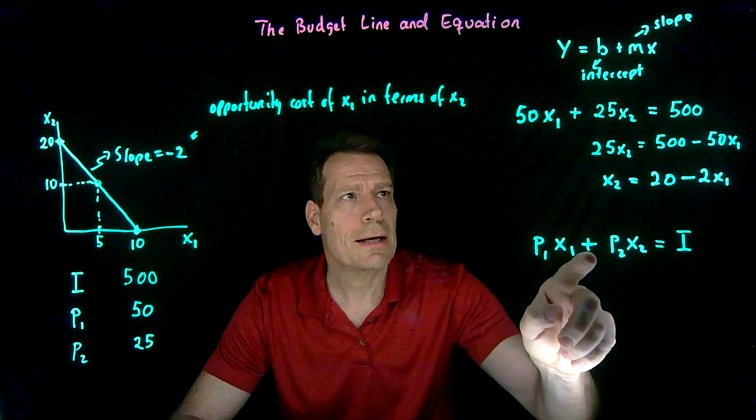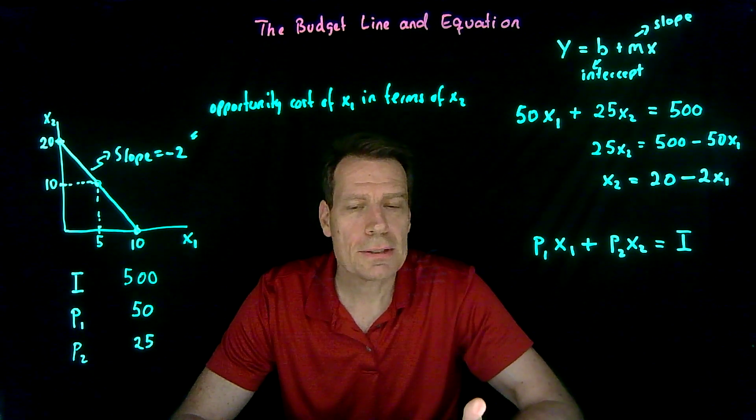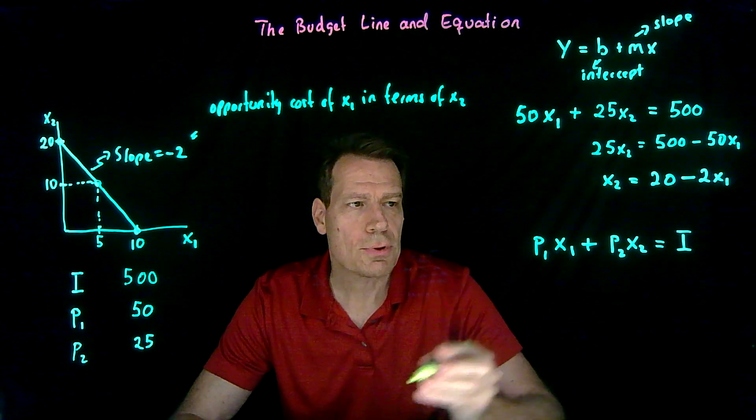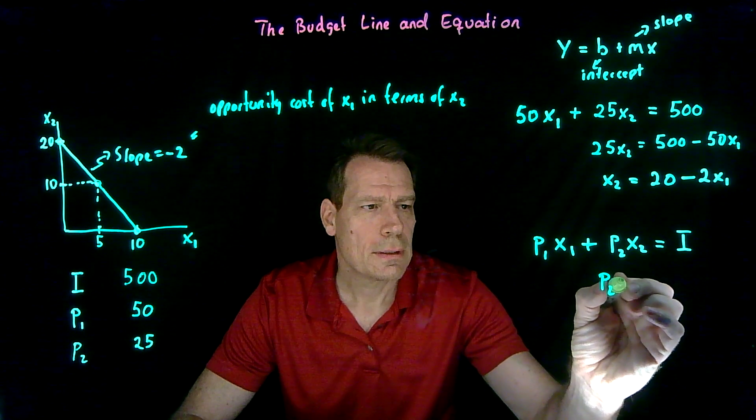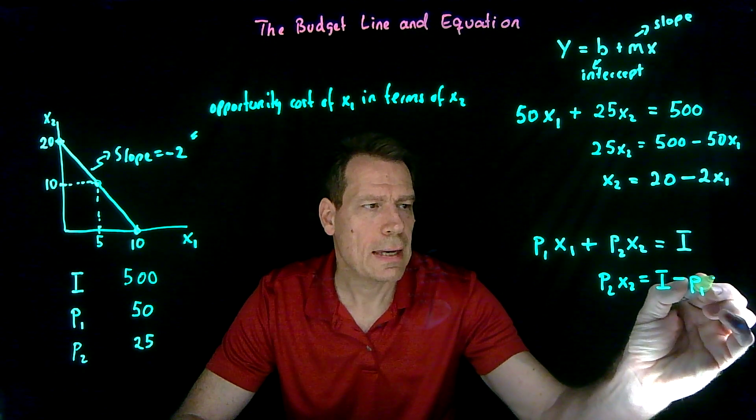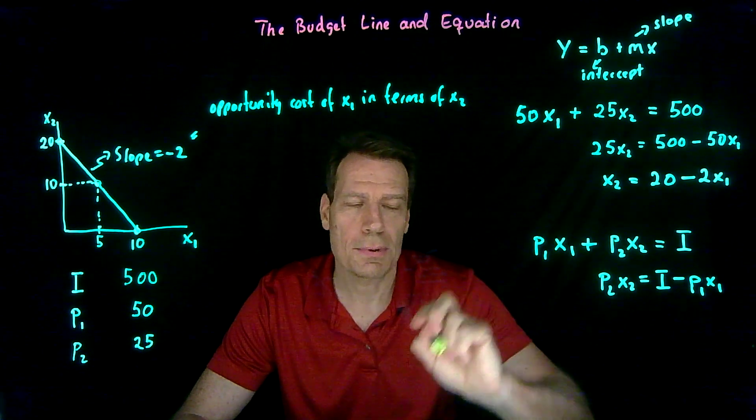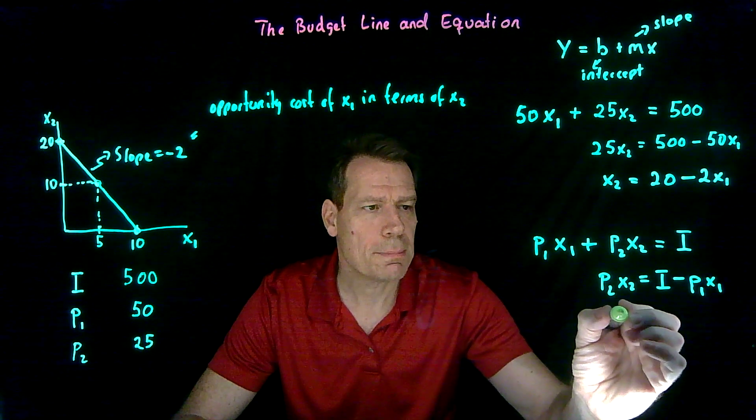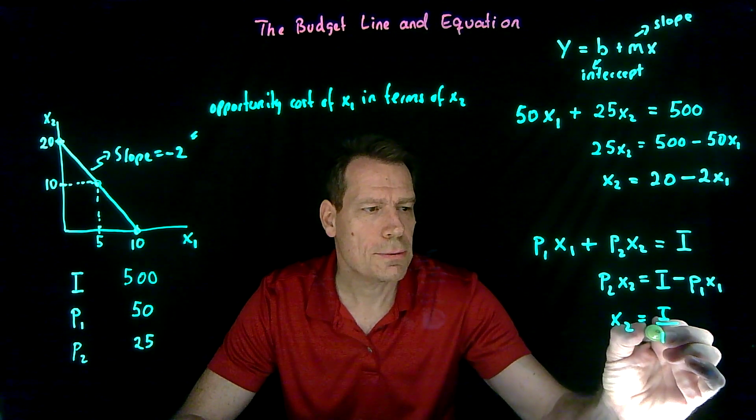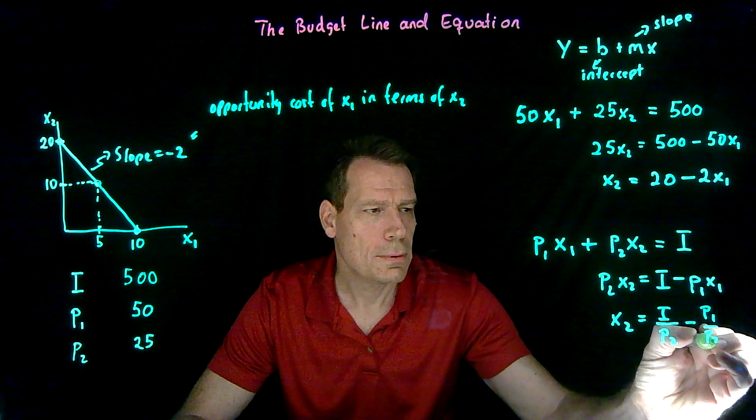Now again we have an equation that's not in the form of y is equal to b plus mx, so we need to put it into that form to see what it means in terms of intercepts and slopes. So we want to get rid of p1x1 on this side so we subtract it out and we get p2 times x2 is equal to I minus p1x1. Then we want to get rid of the p2 to just have x2 on this side the way we did here, so we divide by p2 and we get x2 is equal to income divided by p2 minus p1 over p2 times x1.